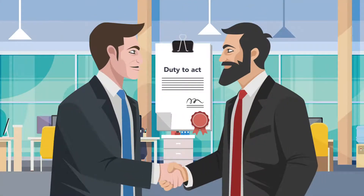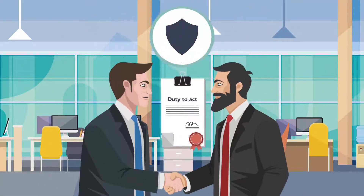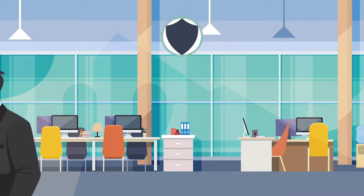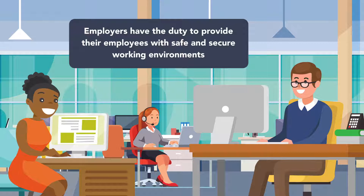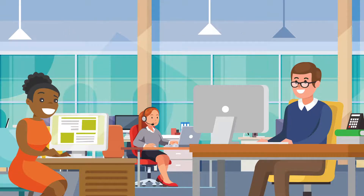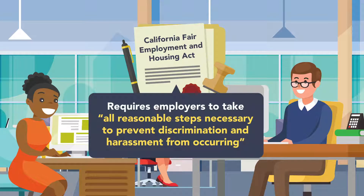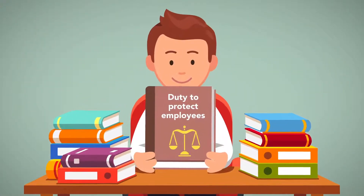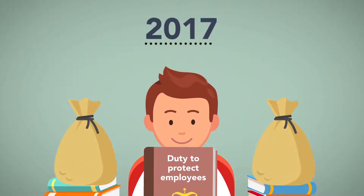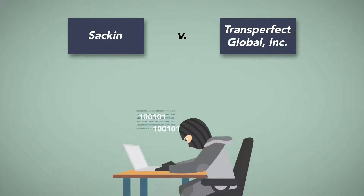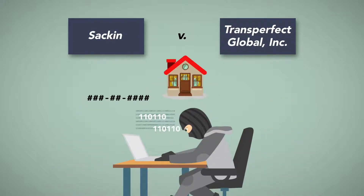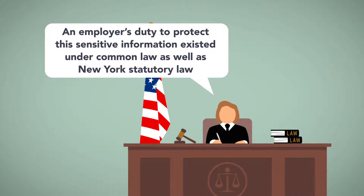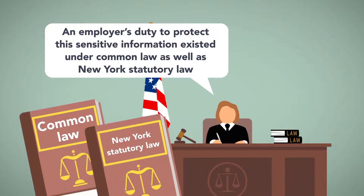A duty to act may also exist between employers and their employees, such as when an employer can protect an employee from foreseeable harm. Employers have the duty to provide their employees with safe and secure working environments. For example, the California Fair Employment and Housing Act requires employers to take all reasonable steps necessary to prevent discrimination and harassment from occurring. An employer's duty to protect employees may even extend to financial injuries. A 2017 New York case, Sacken v. TransPerfect Global Inc., involved a data breach where employees' social security numbers, addresses, and salary information was compromised. The court held that an employer's duty to protect this sensitive information existed under common law, as well as New York statutory law.